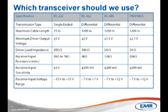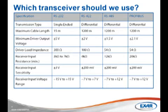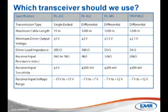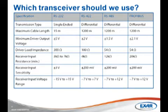Things to consider when selecting a serial transceiver are: 1, distance; 2, topology; and 3, noise immunity. The first thing to think about is distance. For communication less than 15 meters or 50 feet, RS-232 would be the cost-efficient choice. For distances greater than 15 meters, RS-422, RS-485, or PROFIBUS would be the better choice.